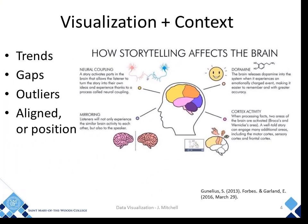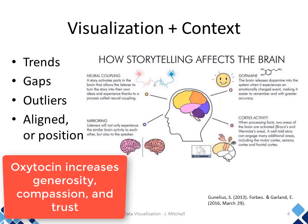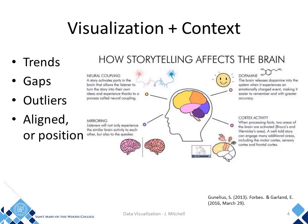But more importantly, if it's an emotionally engaging story, the brain produces oxytocin — a substance shown to increase generosity, compassion, and trustworthiness. So how can we use visualizations to tell our story?